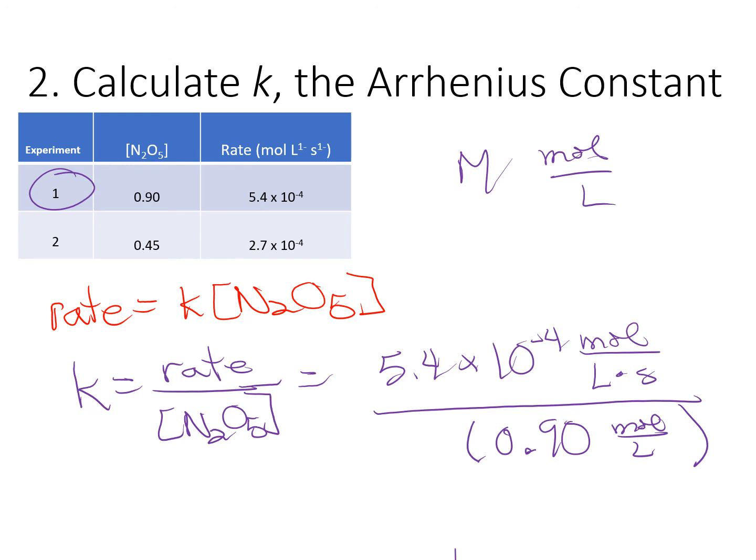Let's calculate and get rid of what we can. 5.4 times 10 to the minus fourth divided by 0.9 gives us a K value. The magnitude is 6.0, 2 sig figs, times 10 to the minus fourth. Now the units: notice the moles cancel, the liters cancel. We're left with seconds in the denominator. You could write it like that. You usually see it as seconds to the minus one. Either of those is fine. That is your K value for this particular reaction.